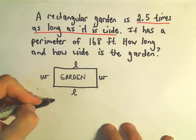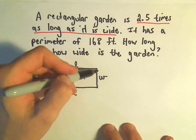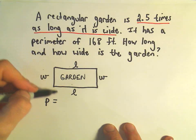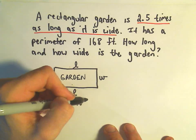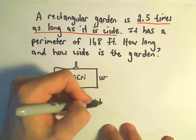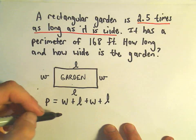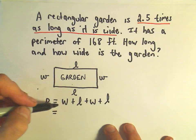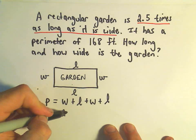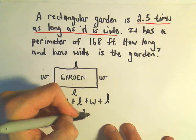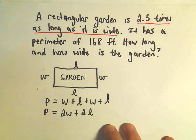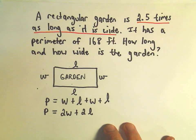Well, remember the perimeter is just the distance around the object. So the distance around, we would have to go W plus L plus W plus L. And if we combine our like terms here, we have 1W and 1W, which will give us 2W. And then we have 1L and 1L, which will give us 2L. And that would be our formula for our perimeter of our rectangle.